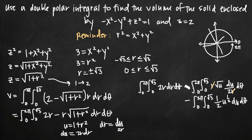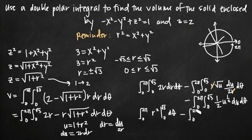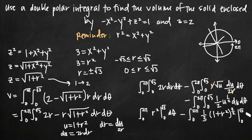Now we integrate both terms with respect to r (or u). For the first integral, the antiderivative of 2r is r squared, evaluated from 0 to square root of 3. For the second integral, using the power rule on u to the one-half: adding 1 to the exponent gives u to the 3/2, and dividing the coefficient one-half by 3/2 gives one-third. Back-substituting u gives one-third times (1 plus r squared) to the 3/2, evaluated from 0 to square root of 3.